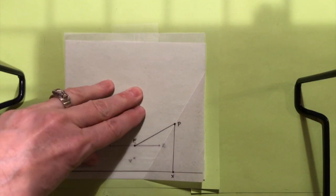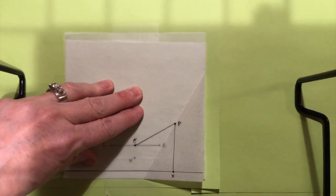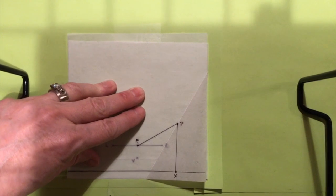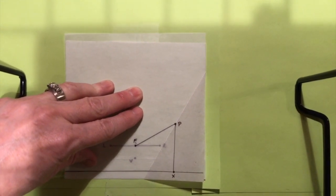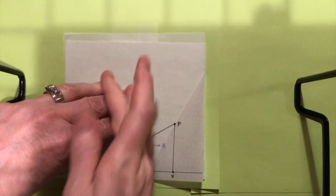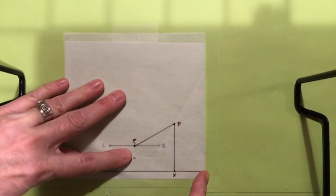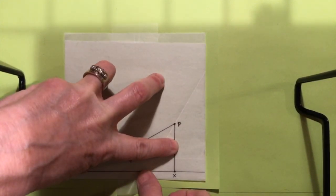And then tape this layer down. But only on the bottom. Only on the bottom edge. Make sure everything is lined up. Tape down the bottom edge.